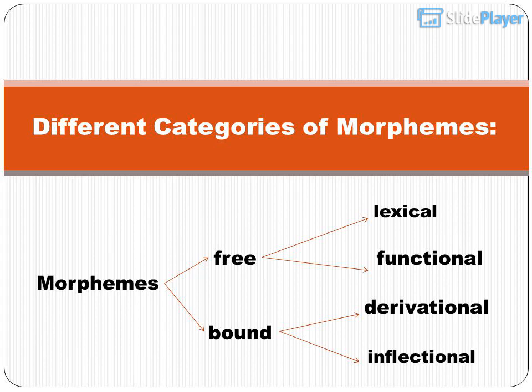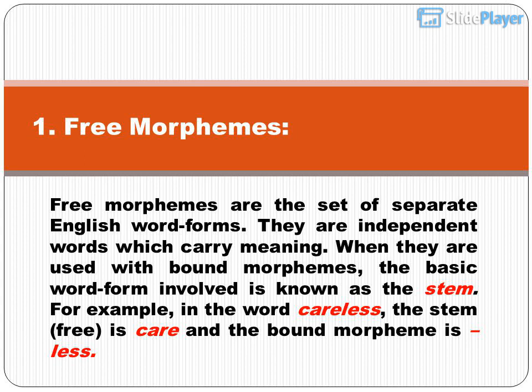Different categories of morphemes include lexical, free, functional, derivational, bound, and inflectional morphemes. Free morphemes are the set of separate English word forms. They are independent words which carry meaning. When they are used with bound morphemes, the basic word form involved is known as the stem.